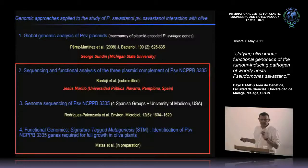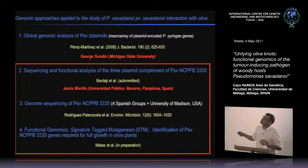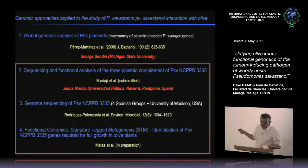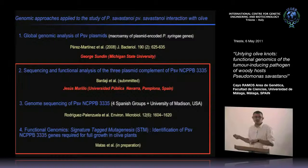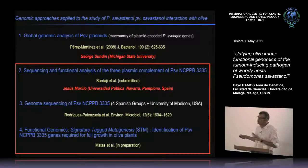To approach our main goal of identifying new virulence factors, we have followed several genomic strategies over the last 5-6 years. First was the construction of a macroarray composed of genes known to be encoded in plasmids of the Pseudomonas syringae complex. We will concentrate on the sequencing and functional analysis of the three plasmids of our strain, the genome sequencing project, and a functional genomic strategy called signature tag mutagenesis.